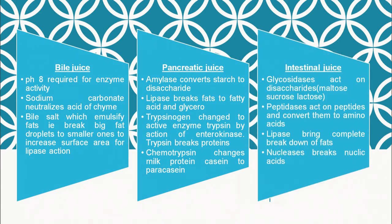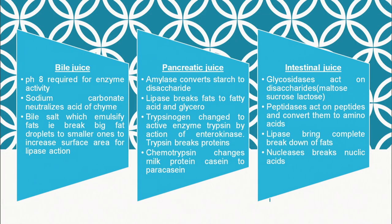The intestinal juice contains glycosidases, which act on disaccharides — maltose, sucrose, and lactose. Maltose is made up of two glucose molecules, sucrose is made up of glucose and fructose, and lactose is broken down into monosaccharides. It also contains peptidases, which act on peptides and convert them into amino acids — the building blocks of proteins. Lipases bring about the complete breakdown of fats. Nucleases break down nucleic acids into phosphate, sugar, and nitrogenous bases.